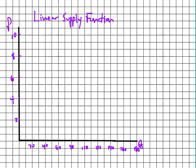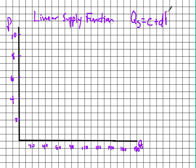We're going to look at the linear supply function. We've already done the linear demand function, and this is going to be very similar. Economists write the linear supply function as: quantity supplied equals C, which is the x-intercept, plus D times the price.